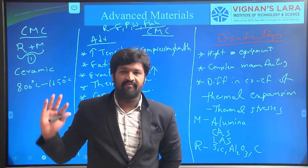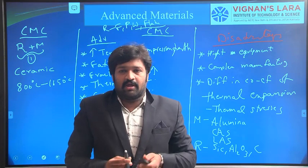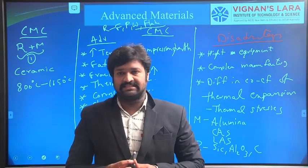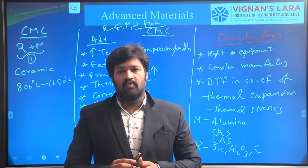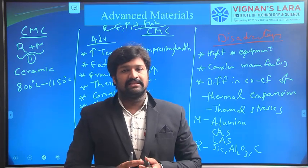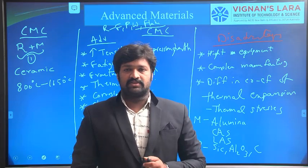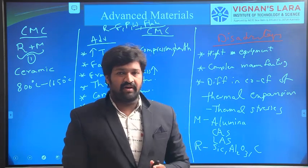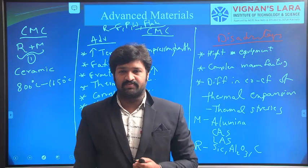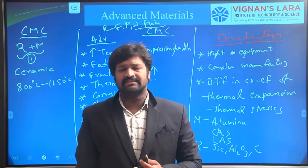This is the summary of Ceramic Matrix Composites. Coming to the applications, ceramic matrix composites can be used in any industry, but they are commonly used for high temperatures. These ceramic materials are used for components that must withstand elevated temperatures, so they are used for rockets and in aerospace, which have high turbines and high propulsion units.